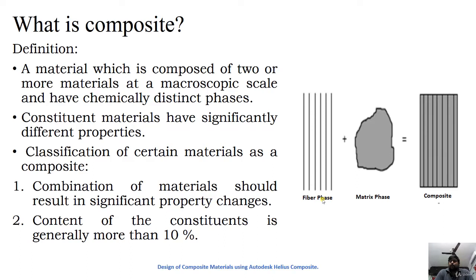We can call only certain materials as composites. The combination of two or more materials should result in significant property changes, not slight property changes — that is one condition. The next condition is that the constituent percentage is generally more than 10 percent.